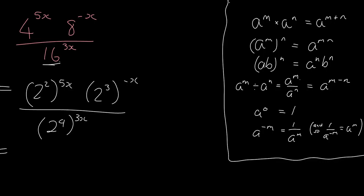Okay, now we can start applying, and we're going to be repeatedly applying this rule to start. So this will be 2 times 5x is 10x. Here you're going to have 3 times negative x, so it's negative 3x. And at the bottom, 4 times 3x, so it's 12x.